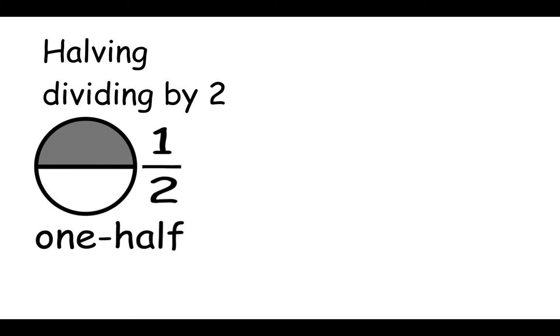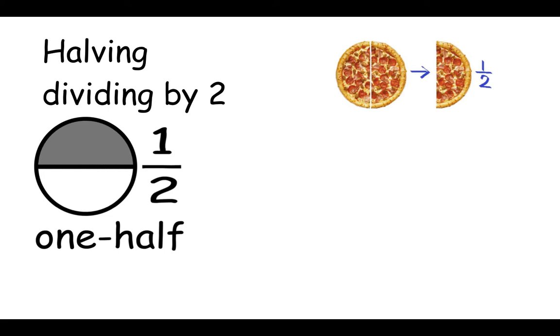When we halve something, it means we divide it into two equal pieces. The word halving is very similar to this fraction here, one half. That's because when we find one half, we're splitting our whole into two equal pieces. So when we halve something, we divide it by two. Here is a pizza, and I've split it into two equal pieces. I've divided it by two. So we could say that I've halved the pizza. And if I take one of those pieces, I've got one half of the pizza.